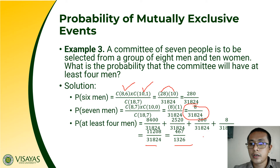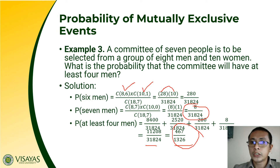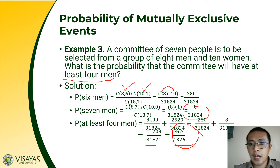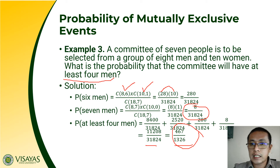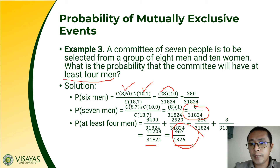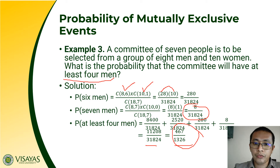This is our final answer. The problem states at least 4 men, so we can have 4, 5, 6, or 7 men. If we have 4 men, there are 3 women. If we have 5 men, there are 2 women. If we have 6 men, there is 1 woman. If we have 7 men, we do not select anyone from the women.